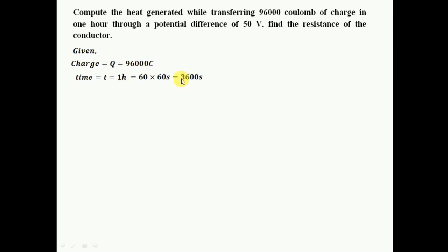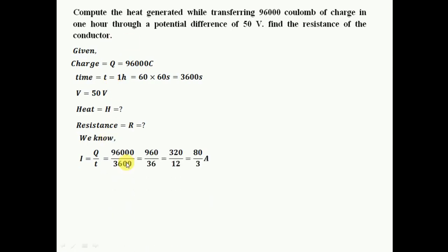This is the second question: compute the heat generated while transferring 96,000 coulombs of charge in one hour through a potential difference of 50 volts, and also find the resistance of the conductor. The given values are: charge is 96,000 coulombs, time is one hour converted to 3600 seconds, and potential is 50 volts. First, I'll find current using I equals charge divided by time: 96,000 divided by 3600 simplifies to 80 by 3 ampere.